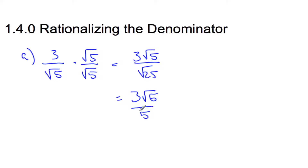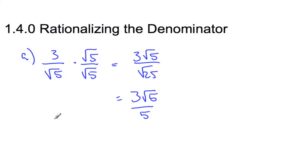The grammar of mathematics says you're not allowed to have a square root on the bottom. You always have to rationalize it by multiplying by root 5. It's just kind of a rule left over from many, many years ago. Grammar mathematicians make it fancy — they want to get rid of square roots from the bottom.